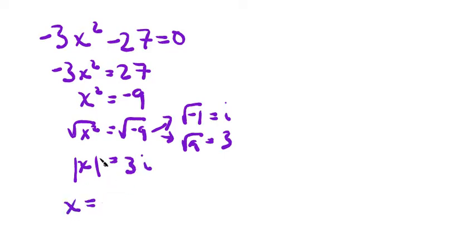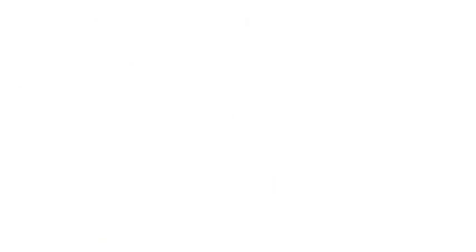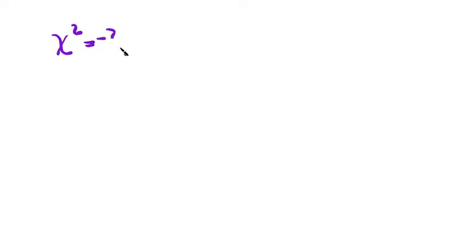Because there's absolute values, x could be positive or negative, and we have to account for both of them. So x is equal to positive or negative 3i. You could also say x equals 3i or x equals negative 3i — they mean the same thing. Let's look at this next example where you have x squared equals negative 32.